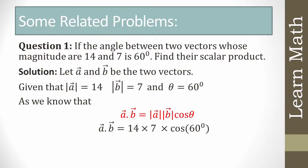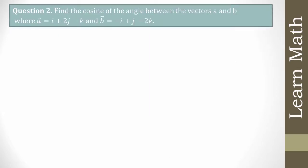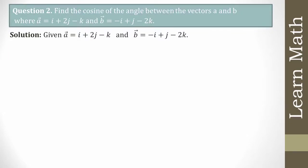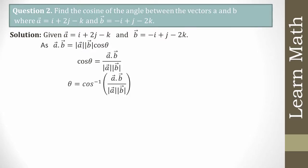Next question: find the cosine of the angle between vectors a and b, where a = i + 2j - k and b = -i + j - 2k. From the formula a·b = |a||b|cosθ, we get cosθ = (a·b) / (|a||b|), and θ = cos⁻¹(a·b / (|a||b|)). First we find a·b.